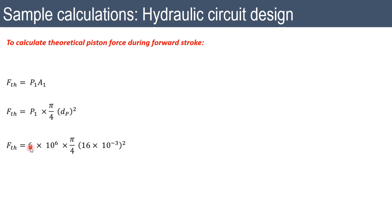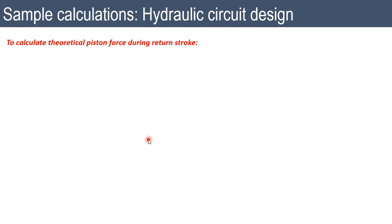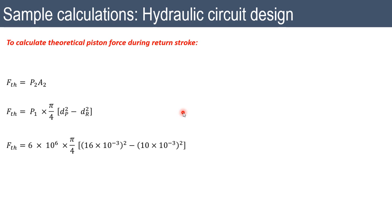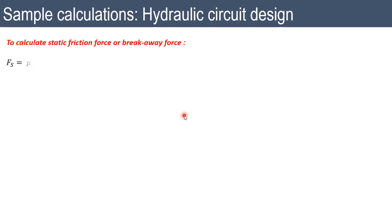Theoretical piston force during forward stroke: F = p1·(π/4)·dp² = 6×10⁶ × (π/4) × (16×10⁻³)² = 1206.37 N. Theoretical piston force during return stroke: F = p2·(π/4)·(dp² − dr²) = 6×10⁶ × (π/4) × ((16×10⁻³)² − (10×10⁻³)²) = 735.132 N. The same pressure p1 = p2 = 6 MPa is assumed for both strokes.